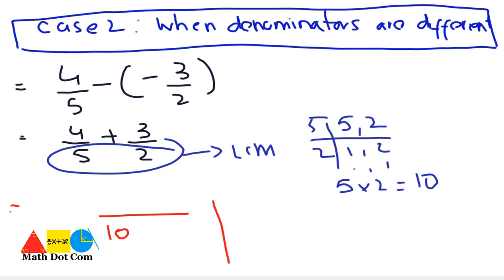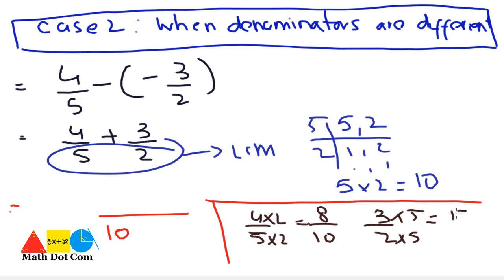How you will do? Let's do it on the side. 4 by 5, how you will make this denominator 10? By multiplying with 2. You will get 8 over 10. Then another term is 3 by 2. How you can make the denominator 2, 10? By multiplying with 5 into 5. It will get 15 over 10. So these are the two terms that you will use.